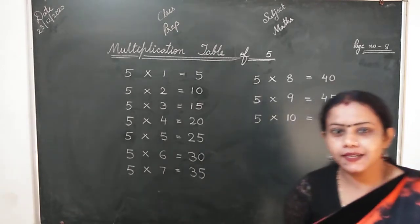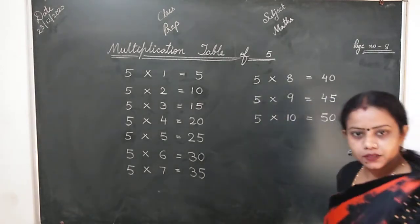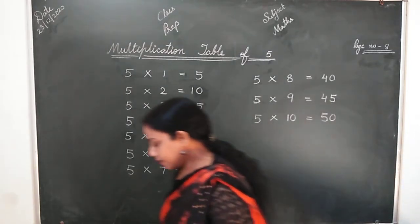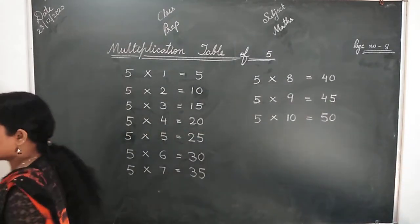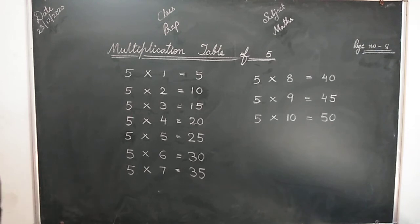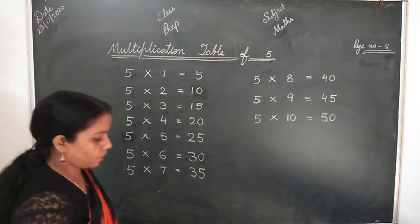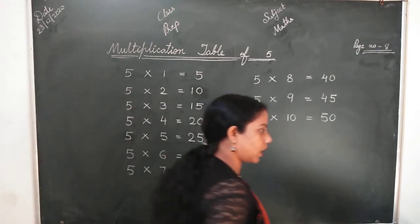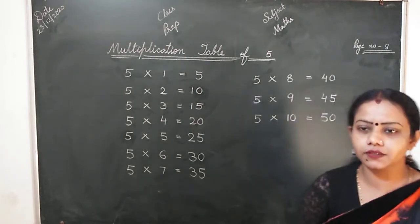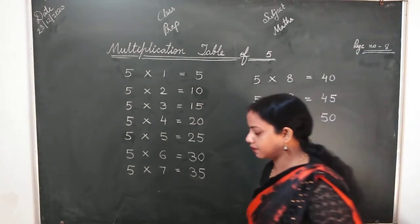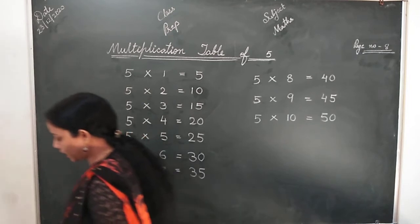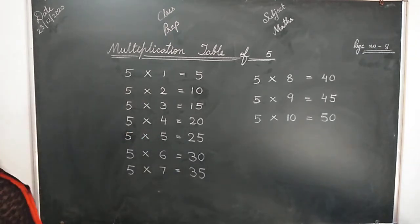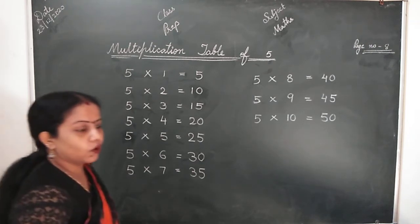Now, lastly, 5 ki table. Agar ek baar 5 se bolenge. 5, 1s are 5. 5, 2s are 10. 5, 3s are 15. 5, 4s are 20. 5, 5s are 25. 5, 6s are 30. 5, 7s are 35. 5, 8s are 40. 5, 9s are 45. 5, 10s are 50.